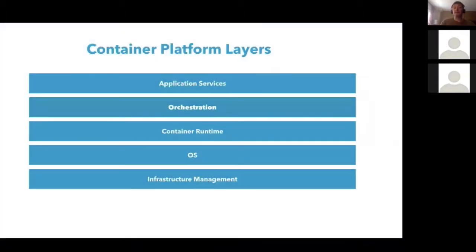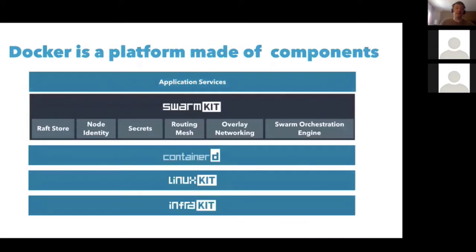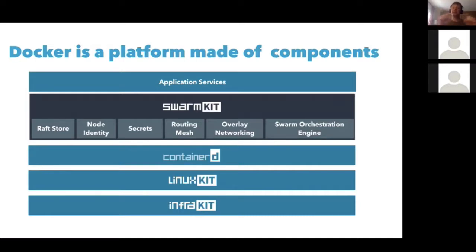Let's talk about Mobi. When you have a container platform it's built out of all these layers. In the Docker case we have components for each layer: InfraKit at the bottom to manage infrastructure, LinuxKit on top — our toolkit to build secure, lean, and portable Linux subsystems — then Containerd, the core container runtime donated to CNCF back in December, which implements the Open Container Initiative spec for runtime and image specs. Then we have SwarmKit for secure orchestration, and on top of that application services like Compose and Build.